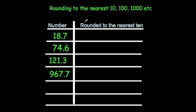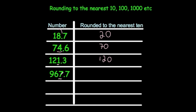Let's look at some questions. 18.7: the units is 8, so we round up to 20. 74.6: the units is 4, so we round down to 70. 121.3: the units is 1, so we round down to 120. And finally 967.7: the units is 7, which is in the 5–9 range, so we round up to 970.